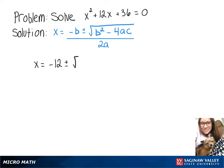So we'll have negative 12 plus or minus the square root of 12 squared minus 4 times 1 times 36, all of that over 2 times 1.